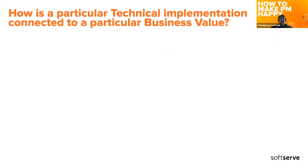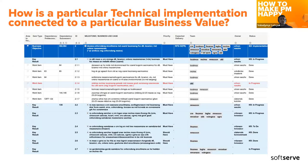The next question: how is a particular technical implementation connected to a particular business value? The simple question is: what is the point of implementing a cool technical solution if it doesn't bring business value? That's why we have this connection between business goals/objectives and work items — work items are the technical implementations required to achieve a business goal — so you can see this hierarchy.